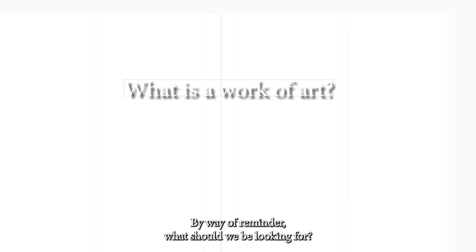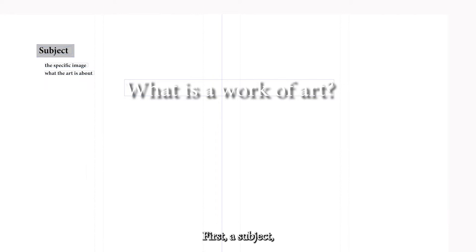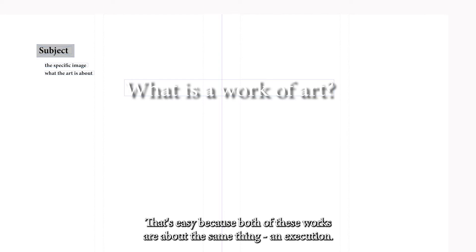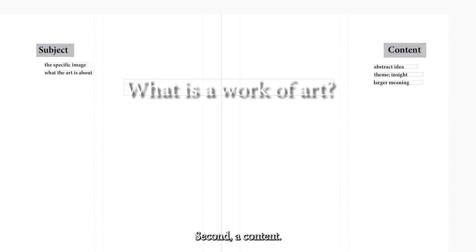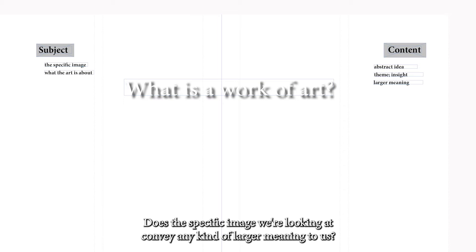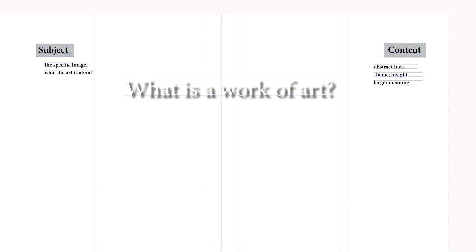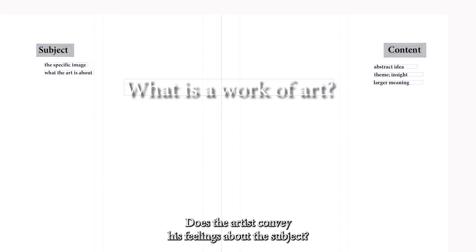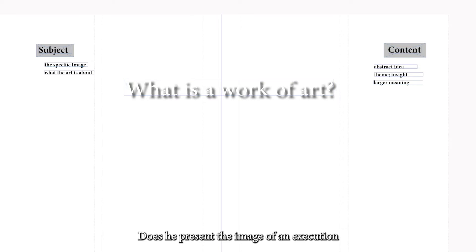By way of reminder, what should we be looking for? Three things. First, a subject — that just means what the work of art is about. That's easy because both of these works are about the same thing: an execution. Second, a content: does the specific image we are looking at convey any kind of larger meaning to us? Since we are looking at an execution, is the artist for or against executions? Does the artist convey his feelings about the subject?